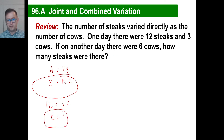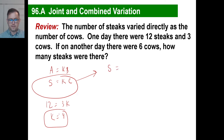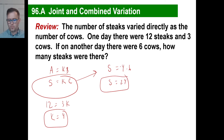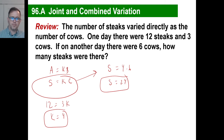Another day there were 6 cows — how many steaks were there? Well, that's our equation now. Steaks varies directly with cows, so how many steaks? That's our s. The k is 4 and there were 6 cows, so there were 24 steaks. You could probably do that in your head just using ratios — it's pretty simple.